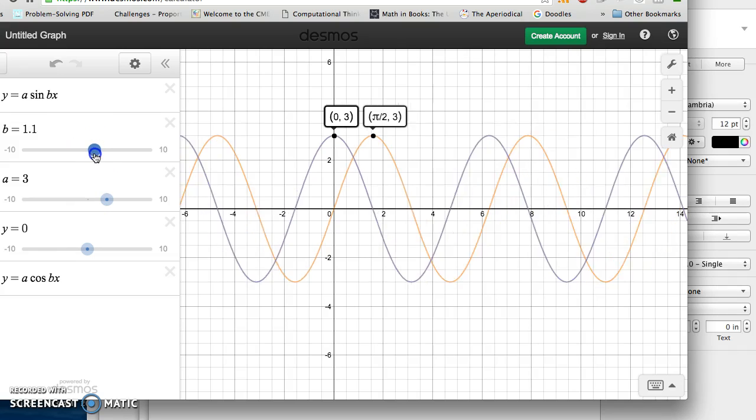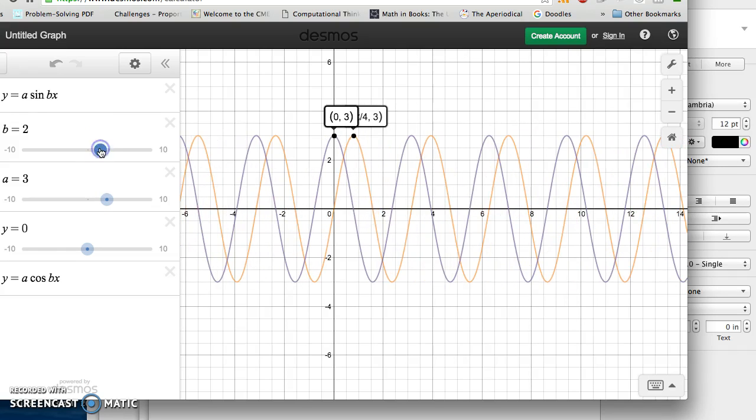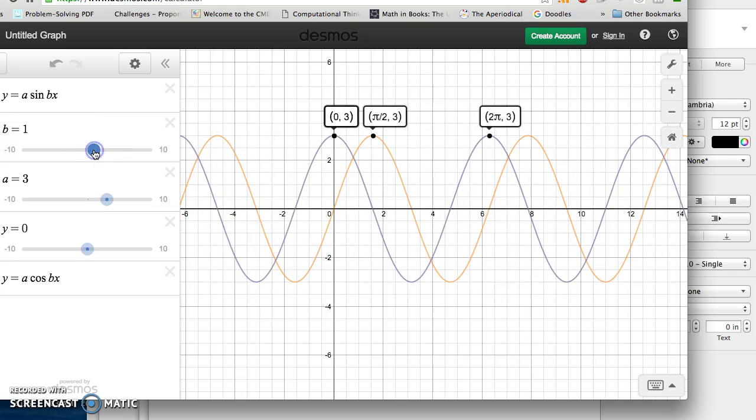If B gets bigger, period gets smaller by the same amount. So, now the period of this function is pi, because B is twice as big as normal. If B is one, the period of just regular Y equals cos x would be 2 pi.